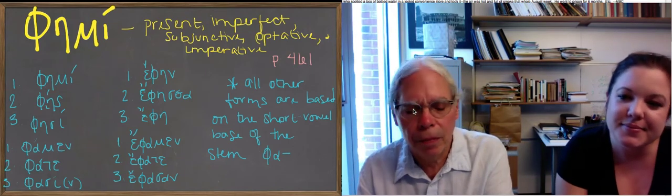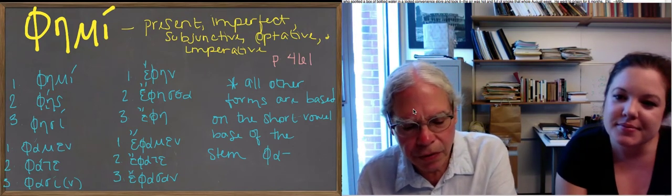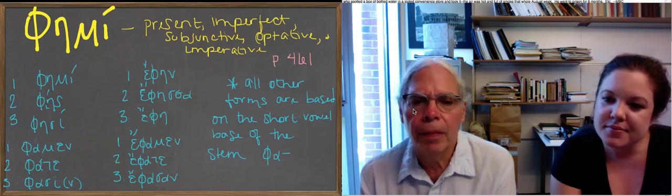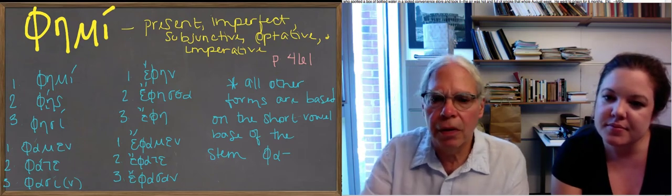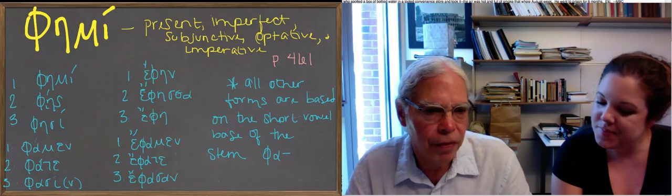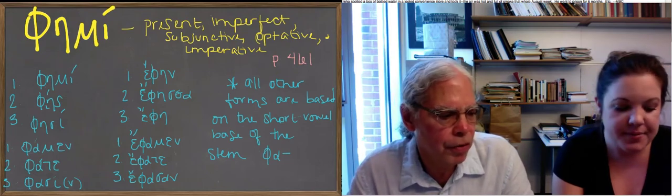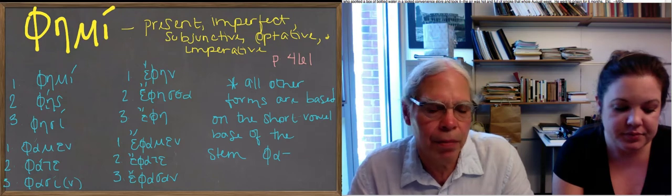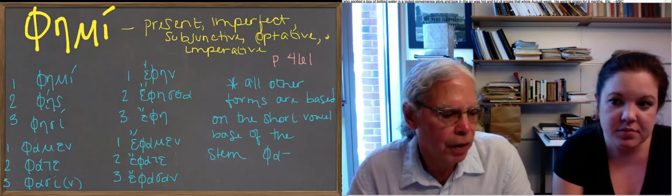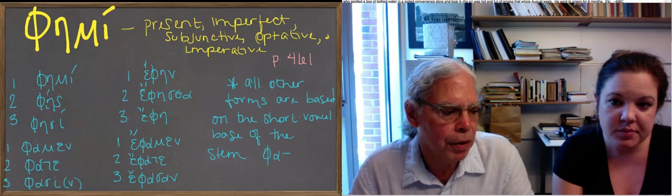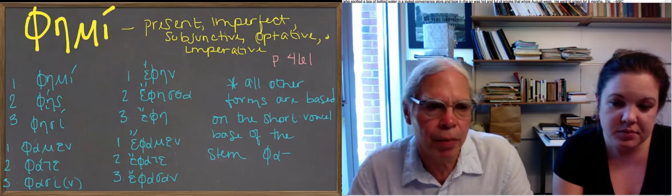Okay, so we're talking about unit 16. At the beginning of unit 16 there's a discussion of two verbs, one that's systematically an athematic verb like histemi, tithemi and didomi, and one that's an athematic verb only in the second aorist. So let's take them one by one.